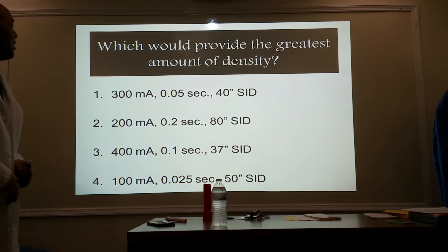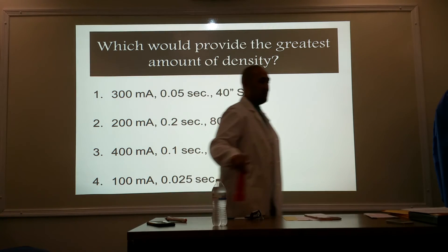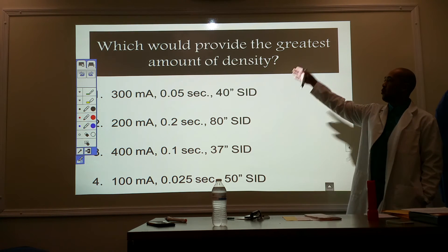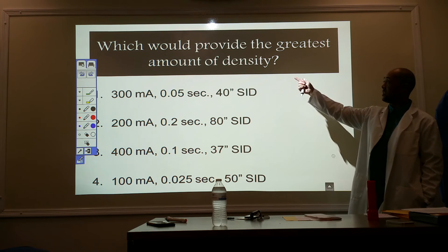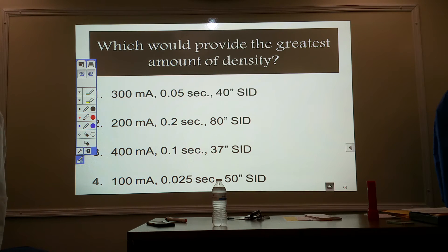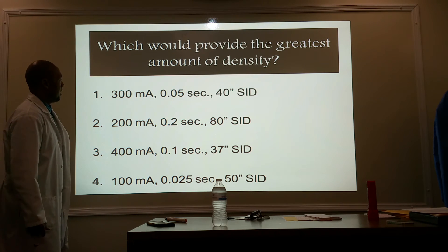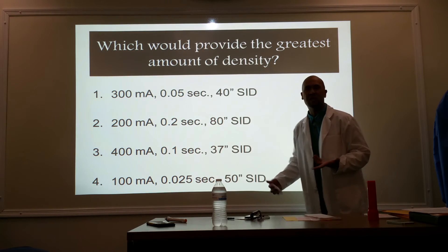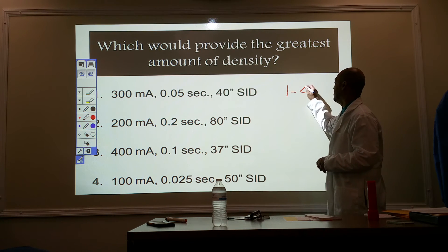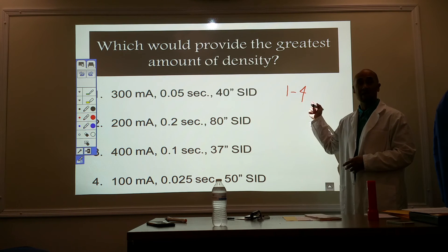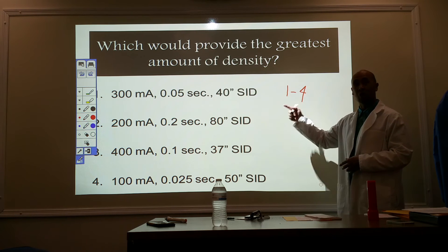All right. If I were to give you a set of factors like this, knowing what you already know about mA, time, and distances, will you be able to tell me which of these factors or combinations is going to give me the most density on my radiographic film? By just simply looking at it. Could you? So, there's a method to this. Let's do this. All right? First, we've got to do here is we've got to assign a rating. I've got four combinations here. Let's just do a rating of one to four. You can do two to five. You can do three to six. You can do zero to three. It doesn't matter. Just as long as you know what your numbers mean.